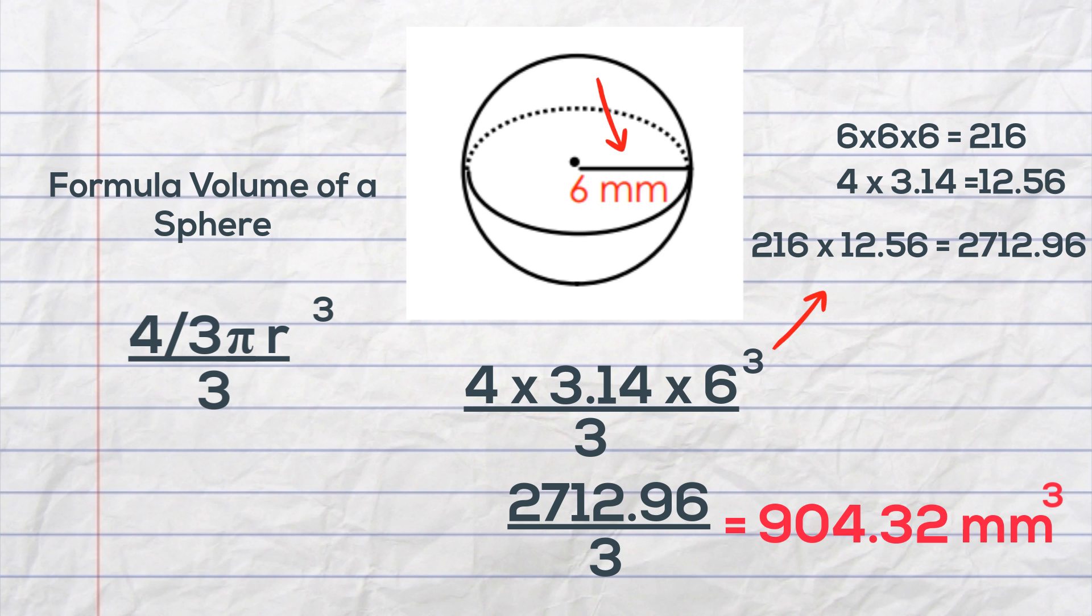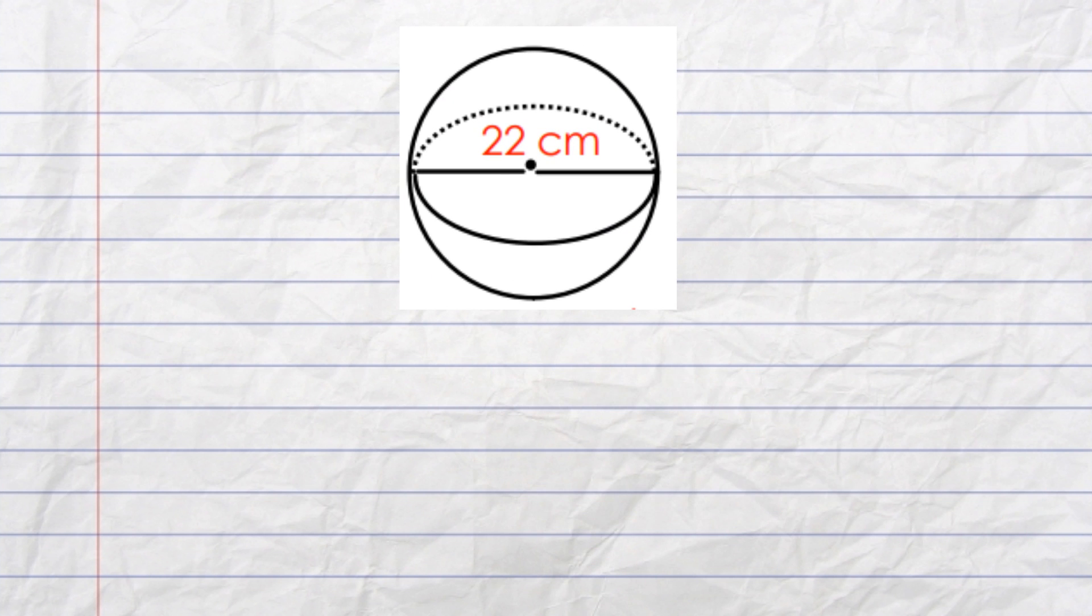Next let's look at another example. This one is a little bit different because instead of the radius I have the diameter and so first in order to get the radius just divide the diameter by 2.